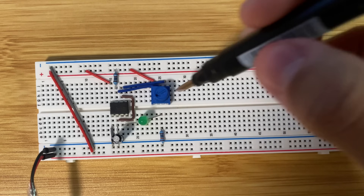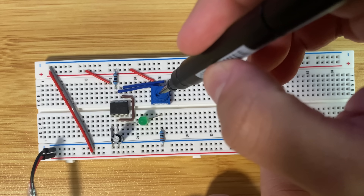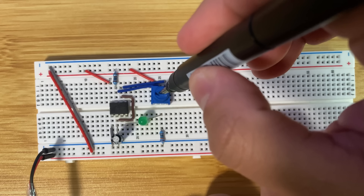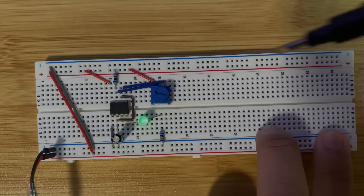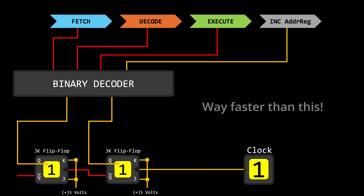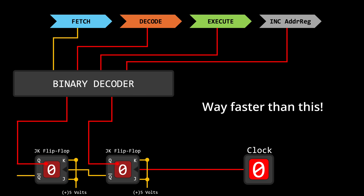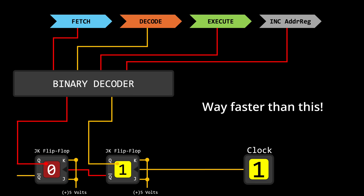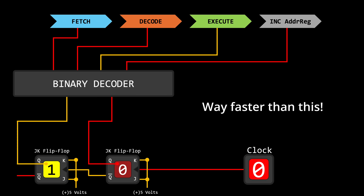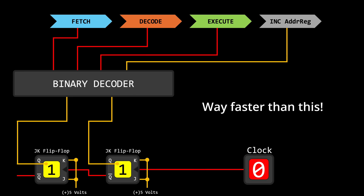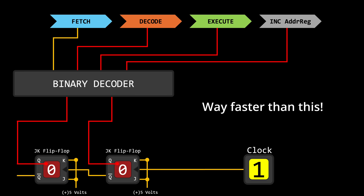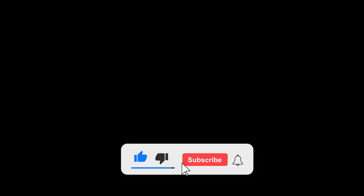Because electronic clocks can be extremely fast, this also explains how computers can execute instructions at incredibly high speeds. Without electronic clocks, computers would not be as fast as we know them, because the oscillating signal would have to be created in another way — probably with moving mechanical parts, which would be many orders of magnitude slower. And if you learned something today, don't forget to like and subscribe.